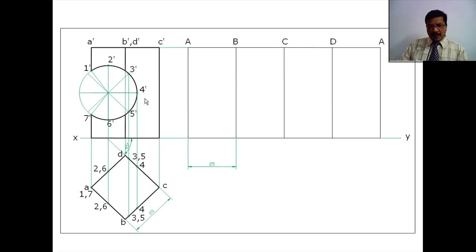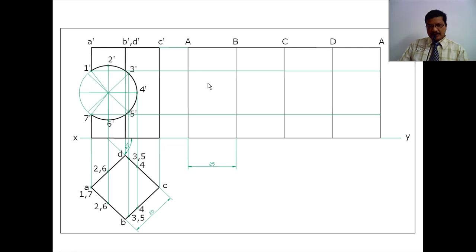I want to transfer points 1, 2, 3, 4, 5, 6, 7 to the development. Draw a locus line from 1 dash and a locus line from 7 dash. Automatically, these 1 and 7 points are on face edge A. The intersection points of face edge A and these locus lines will give points 1 and 7 on the development — here I will get 1, and here I will get 7. Since face edge A also appears at the far end, again I will get 1 and 7 there.